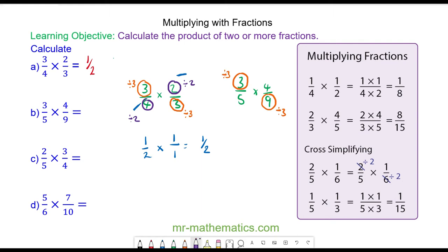The four and the five have no common factors, so we'll leave them as they are. Now we have three divided by three which is one, over five, multiplied by four over nine divided by three which is three. The numerator is one times four and the denominator is five times three — giving us four over fifteen.